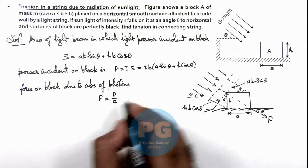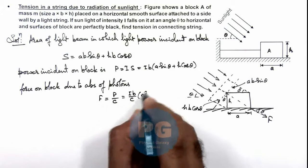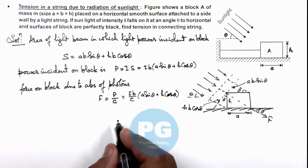Where the angle with the horizontal is θ. So in this situation, this is the force which we can write as Ib/c multiplied by a sinθ plus h cosθ.